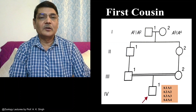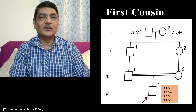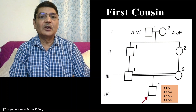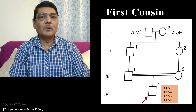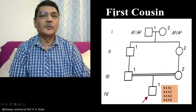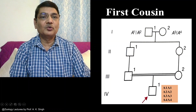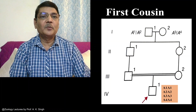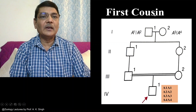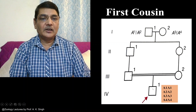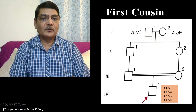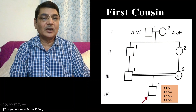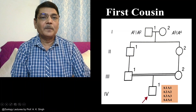We can learn this aspect by considering some cases. Let me consider first a case of first cousin marriage. Still in several parts of the world there are certain ethnic groups in which first cousin marriages do take place. What would be the consequence of such marriage — that is, what would be the amount of homozygosity because of this first cousin marriage — we can learn by going through this diagram.